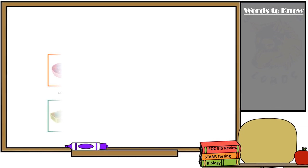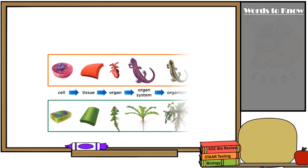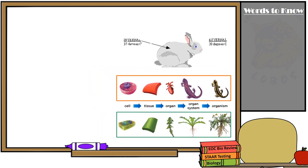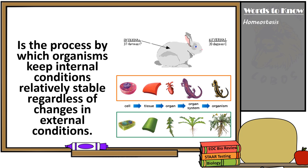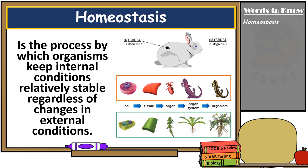Now that you're familiar with what cells look like, it's important that you understand that cells are constantly interacting with their environments within the organism. All living things must maintain a stable internal environment in order to function properly. The process by which organisms keep these internal conditions relatively stable regardless of changes in external conditions is called homeostasis. The exact conditions that an organism needs vary from organism to organism. If homeostasis is disrupted in a major way, however, the organism may die.